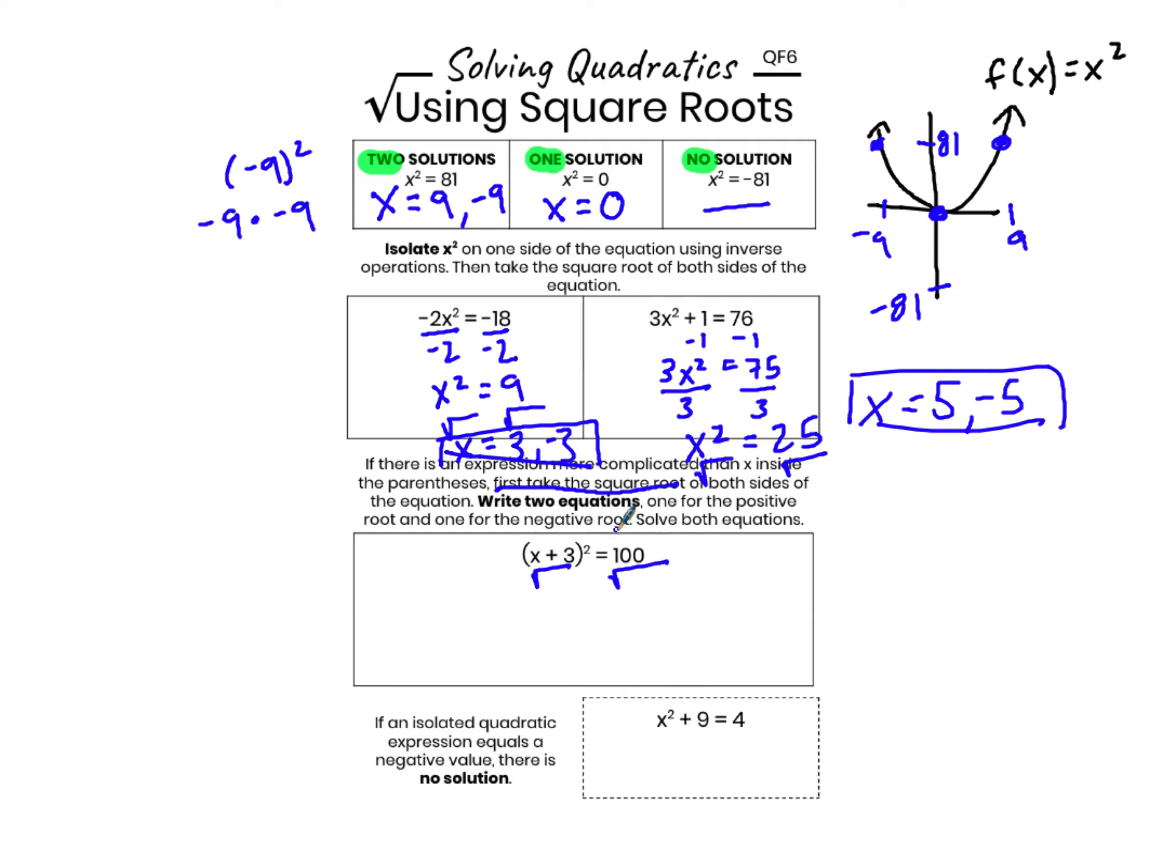So x plus 3 and then squared. First thing I need to do is undo the squaring with square roots. When I take the square root of x plus 3 squared, what I'm left with is just x plus 3, whatever's inside that parentheses.